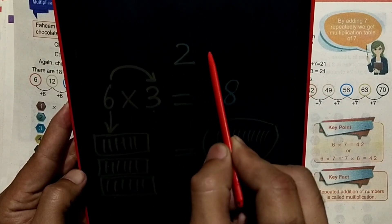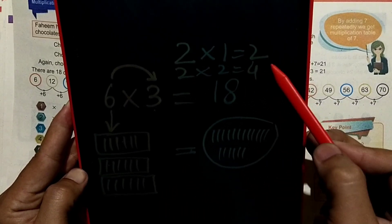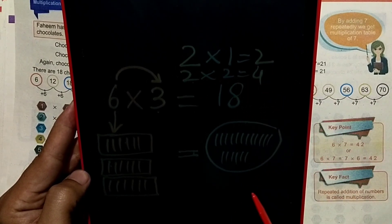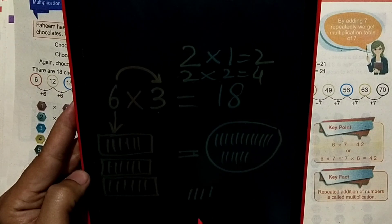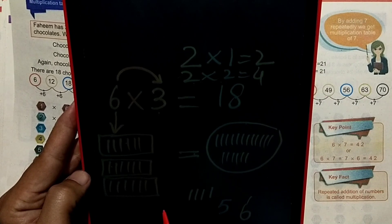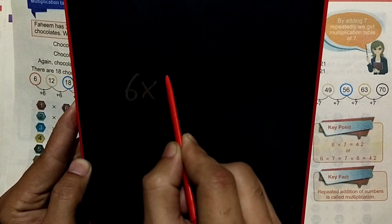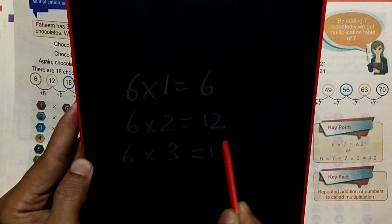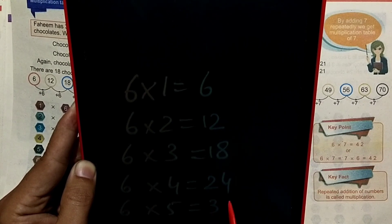2 table: 2×1=2, 2×2=4. 3 table: 3. 4 table: 4. 5 table: 5. 6 table. The six multiply one is equal to six, six multiply two is equal to twelve, six multiply three is equal to eighteen, six multiply four is equal to twenty-four, six multiply five is equal to thirty.